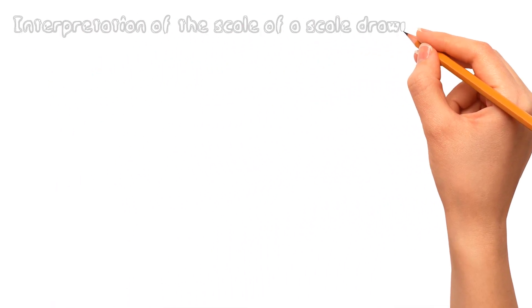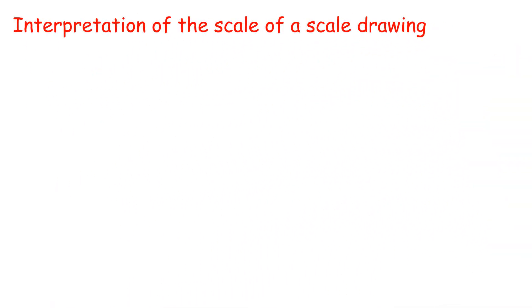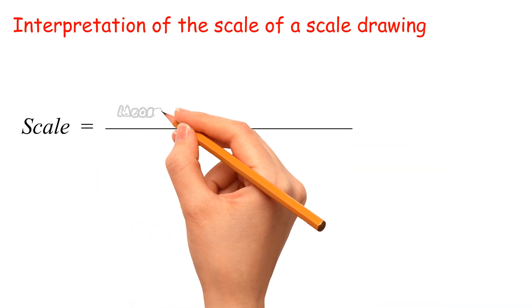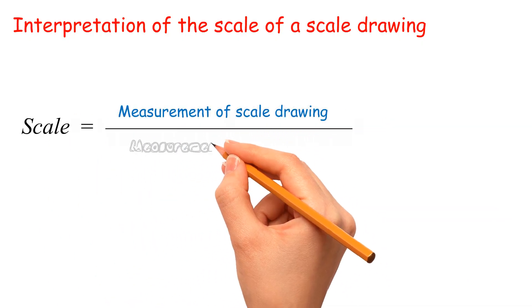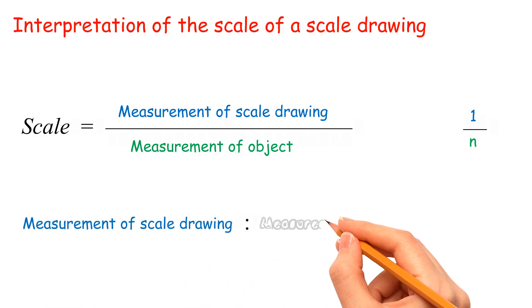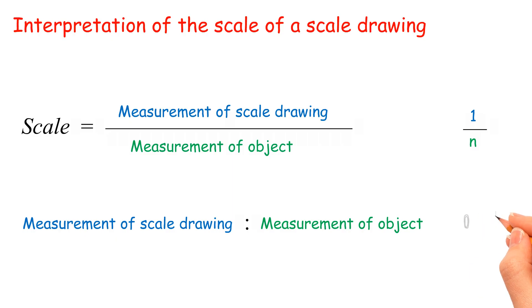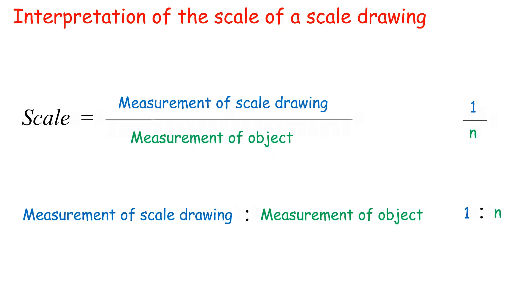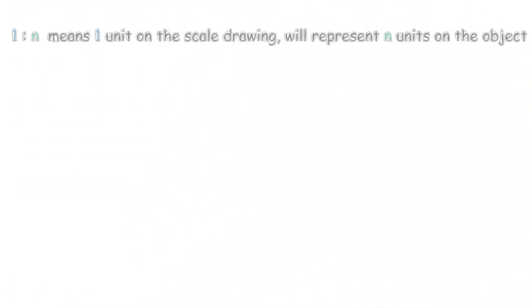Interpretation of the Scale of a Scale Drawing: Scale equals measurement of scale drawing divided by measurement of object, equals 1 over n. Can be written in the form, measurement of scale drawing colon measurement of object equals 1 colon n, where n is a positive integer or fraction. 1 is to n means 1 unit on the scale drawing will represent n units on the object.